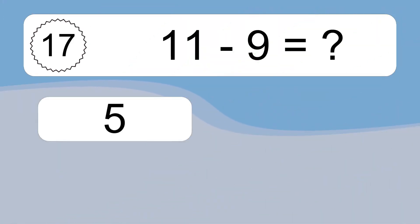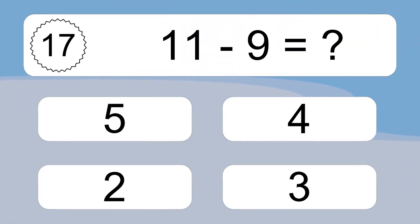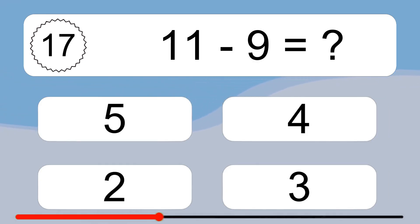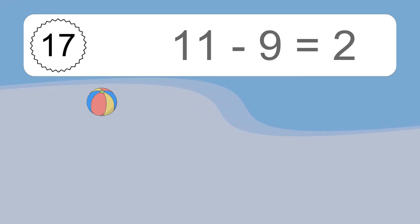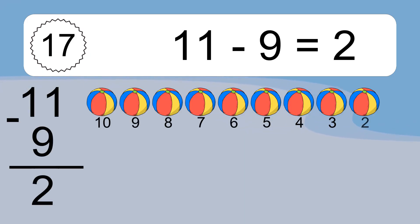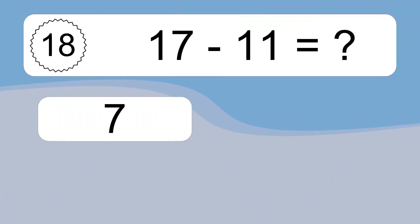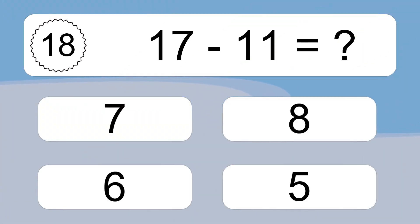11 minus 9 equals what? 11 minus 9 equals 2. Let's count it. 10, 9, 8, 7, 6, 5, 4, 3, 2. 17 minus 11 equals what?